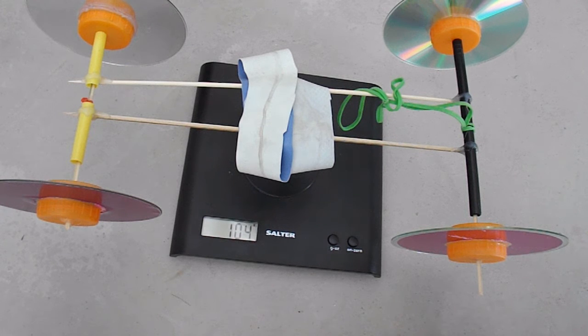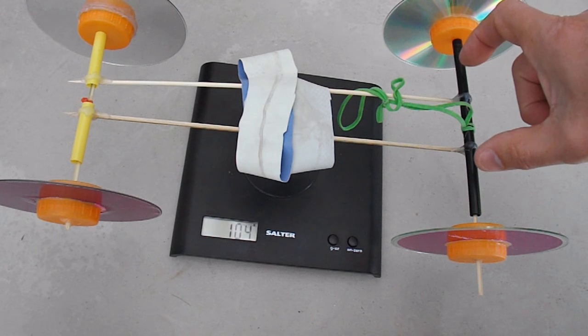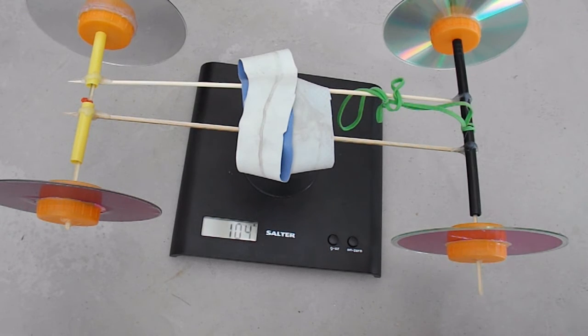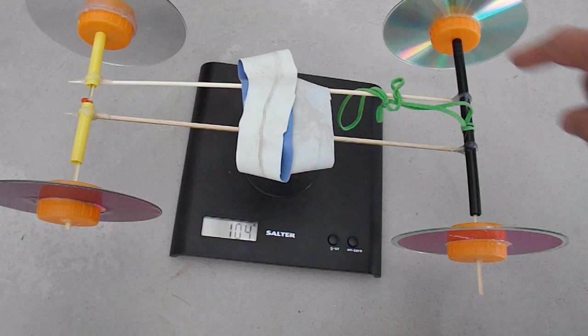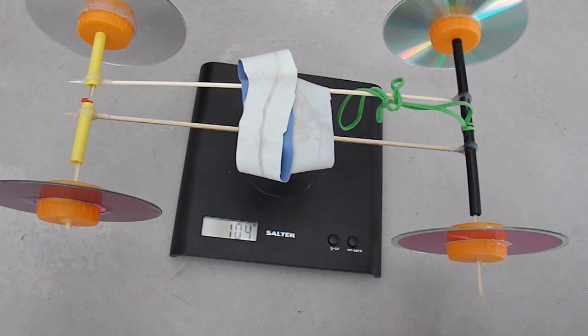So this car is 104g all up. We could make it lighter by trimming this tube down so it's narrower. And then you can start doing things like cutting the ends off the barbecue skewers, because I've got quite a bit sticking out either side. And if you need it even lighter, you can start drilling holes in your CDs and using less glue to put it together. But being as we're talking 200g, and this is about 100g, we'll just see how well it goes.